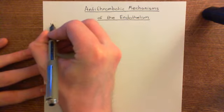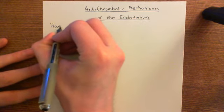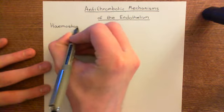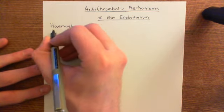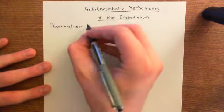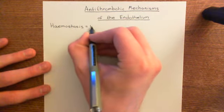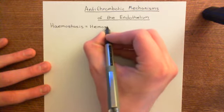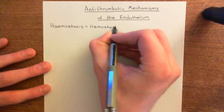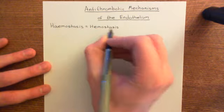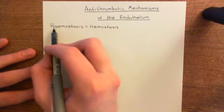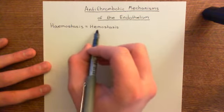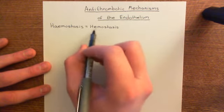So, hemostasis. This is also spelt a different way. The way I've always been taught is with the British-English spelling of 'haeme', and I just can't resist putting the A in. The American spelling would be with the omitted A. That looks odd to me just because I've been brought up with the British spelling.